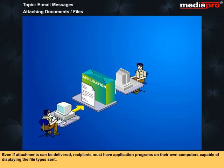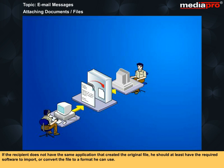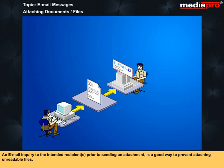Even if attachments can be delivered, recipients must have application programs on their own computers capable of displaying the file type sent. If the recipient does not have the same application that created the original file, he should at least have the required software to import or convert the file to a format he can use. An email inquiry to the intended recipient prior to sending an attachment is a good way to prevent attaching unreadable files.